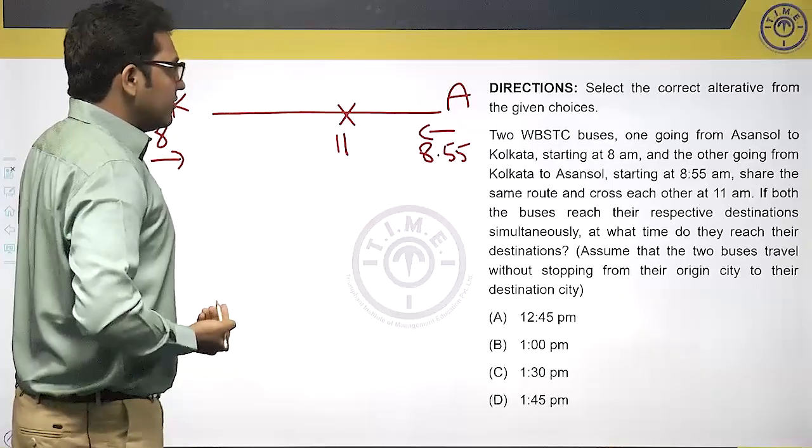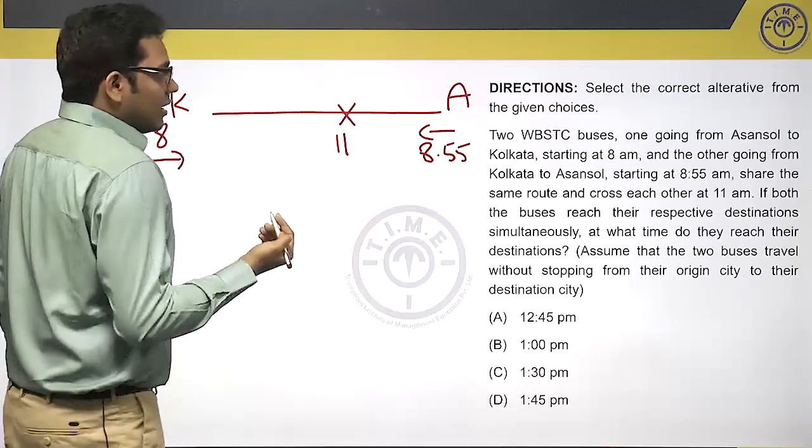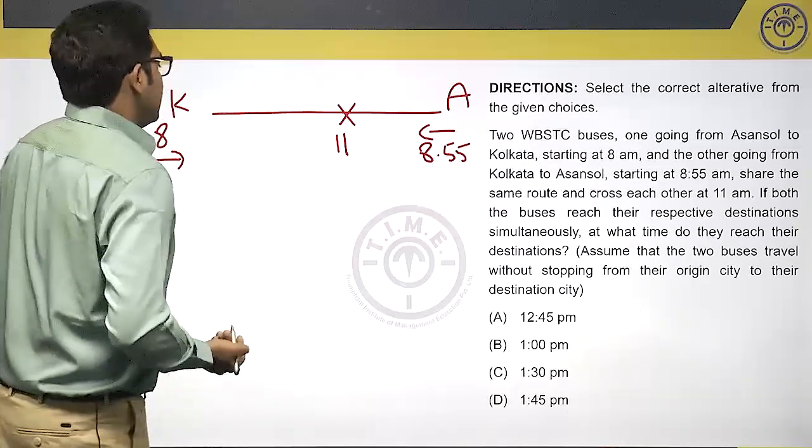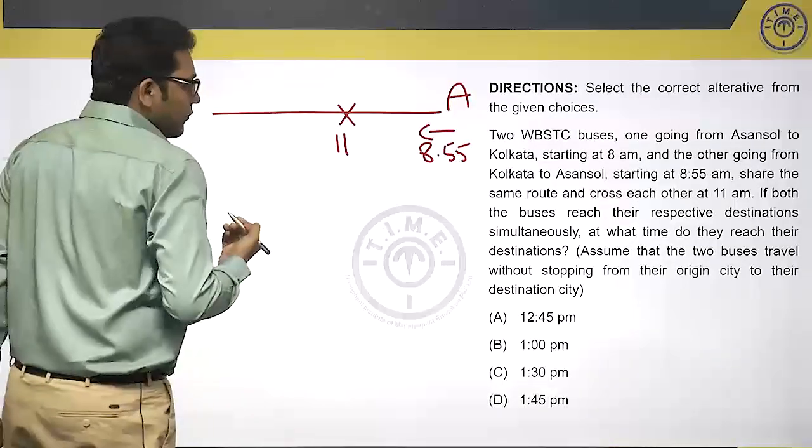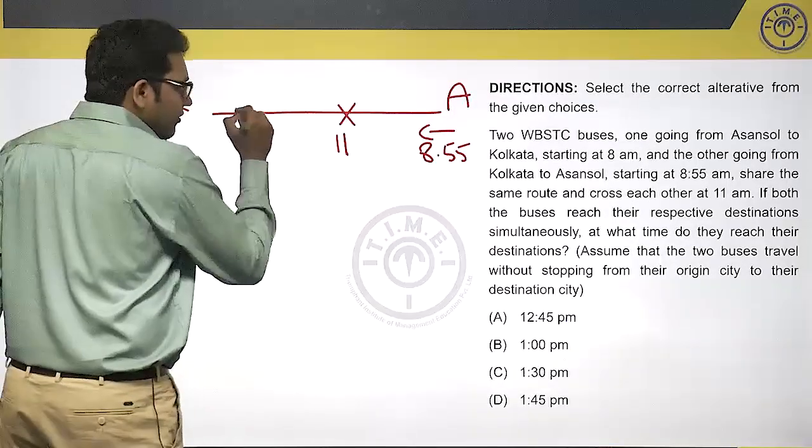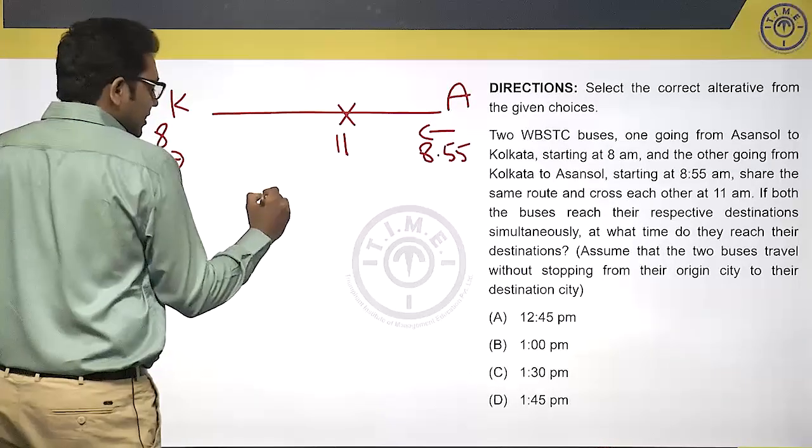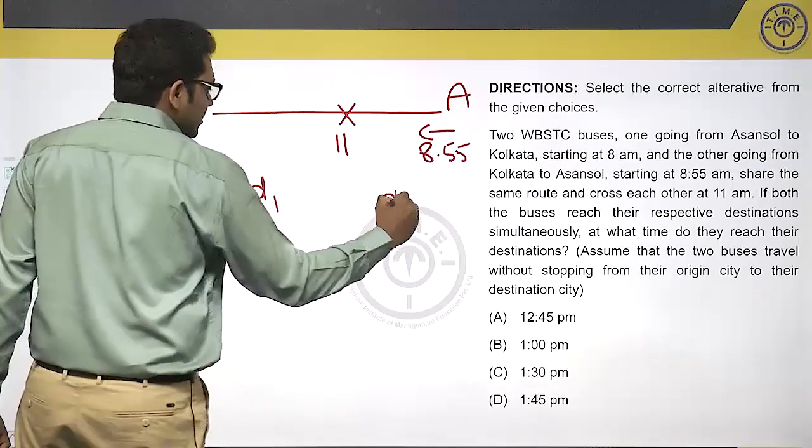If both buses reach their respective destinations simultaneously, at what time do they reach their destinations? It starts at 8 o'clock and 8:55. So it takes three hours to travel this distance. Let this distance be D1. This distance is D2.